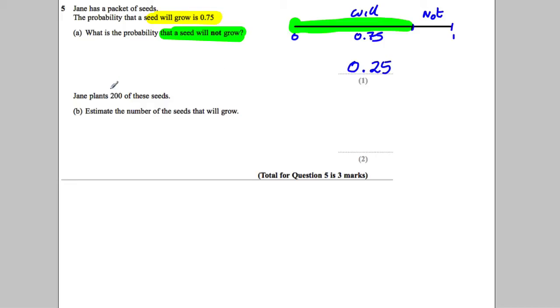Now, Jane plants 200 of these seeds. Estimate the number of these seeds that will grow. If the probability that they will grow is 0.75, what we're doing is we're trying to work out if we multiply 200 by the probability, that will give us an estimate.